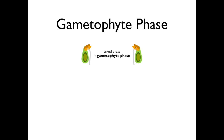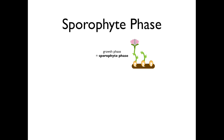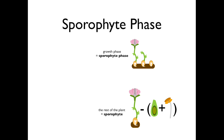In plants, the sexual phase is called the gametophyte phase and the sexual organs are called the gametophytes. The growth phase is called the sporophyte phase, and the rest of the plant — everything excluding the gametophytes — is called a sporophyte.